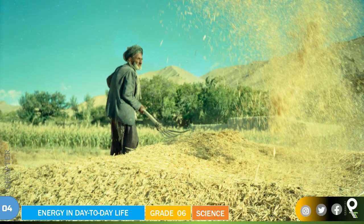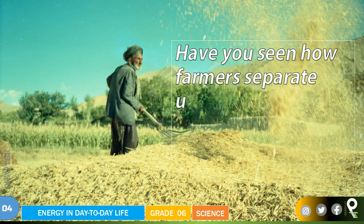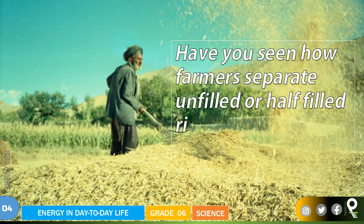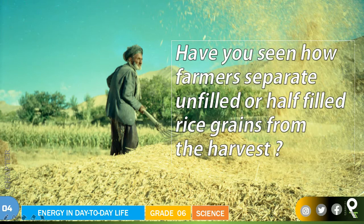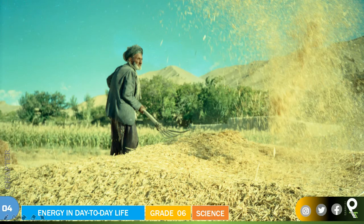This old man is using the wind to do his harvesting. Have you seen how farmers separate unfilled dough and half-filled rice grains from the harvest? When he is throwing that rice with the particles we can't consume — which are very less in weight than the grains — those lighter particles will be taken away by the wind.